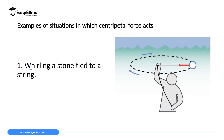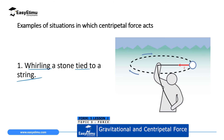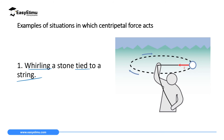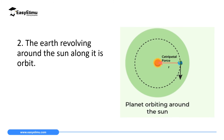One example of centripetal force is whirling a stone tied on a string. When you whirl it, the stone makes a continuous circular path, and the force which maintains it on that circular path is called centripetal force.